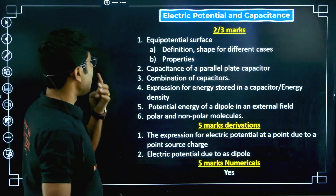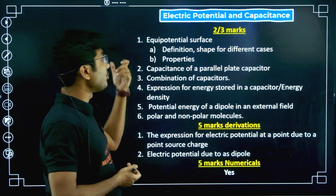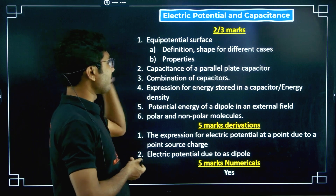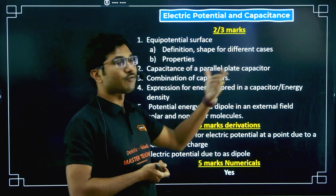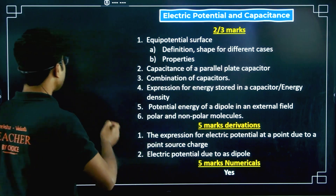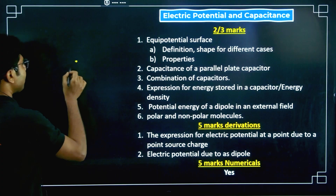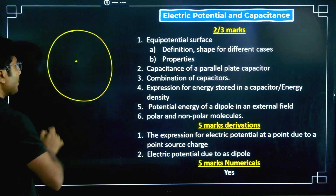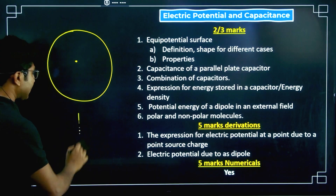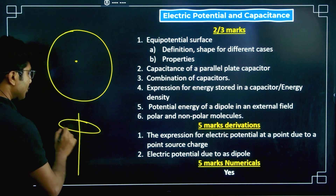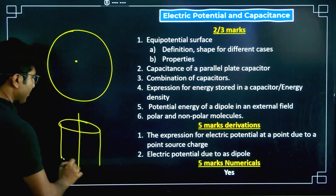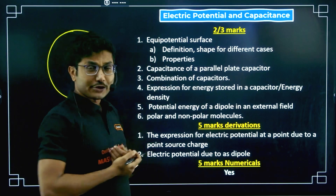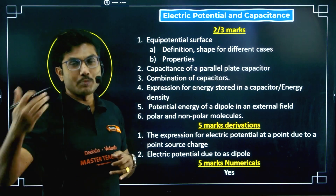The next chapter is Electric Potential and Capacitance. Equipotential surface is a very very important topic from this chapter — the definition and the shape for different cases. For example, the equipotential surface for a point charge is spherical, and for a line charge it is cylindrical. You have to understand and remember these. Properties of equipotential surfaces — writing two or three properties — is also a common question.